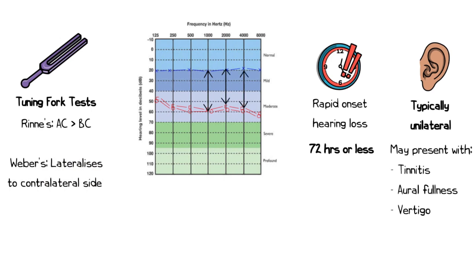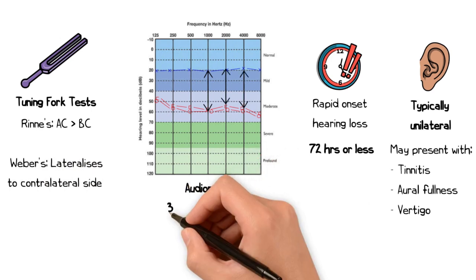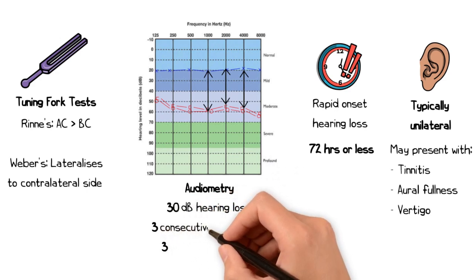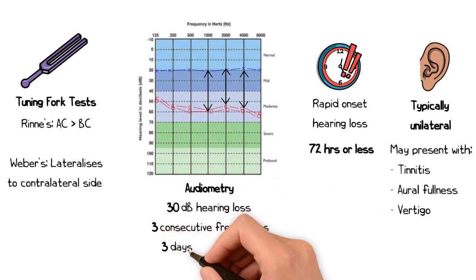The diagnosis is confirmed with audiometry. A sensory neural hearing loss of at least 30 decibels across three consecutive frequencies on a pure tone audiogram occurring within three days or less confirms the diagnosis of sudden sensory neural hearing loss.